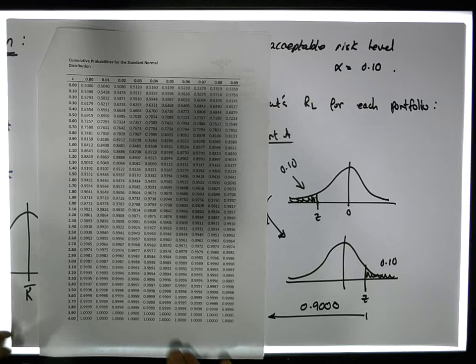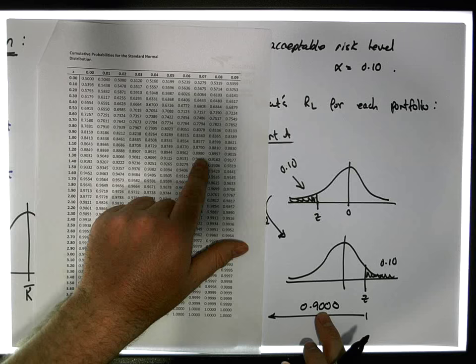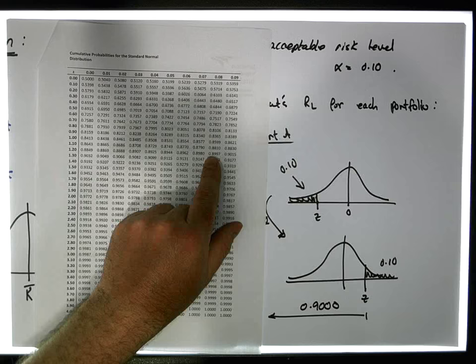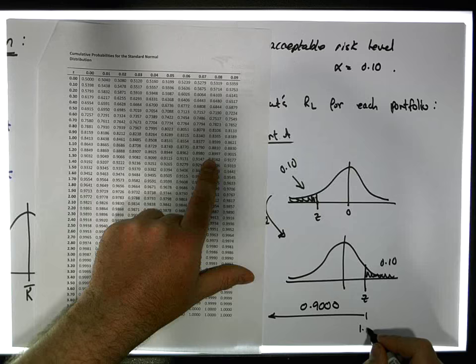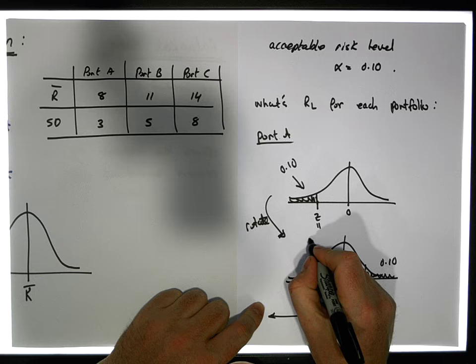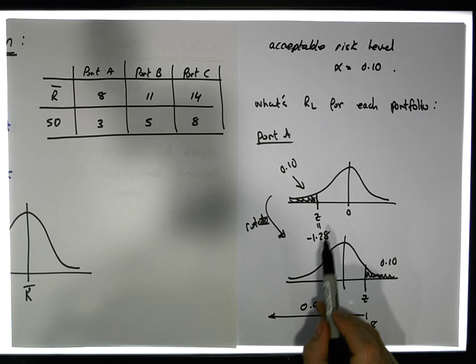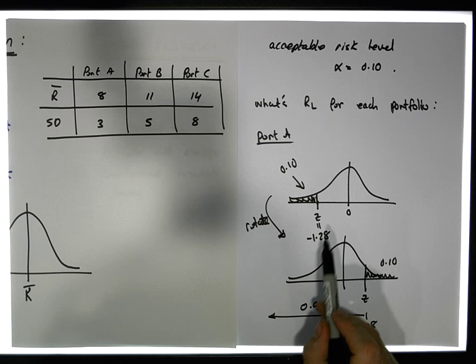Looking up 0.90 in the z-table: 0.9015 is slightly above and 0.8977 is just below, so the z-score appears to be 1.28. This means the z-score on the left-hand side is minus 1.28. This applies to all portfolios — the z-score that has 10% of the area to its left is always minus 1.28. Now we can proceed with portfolio A.